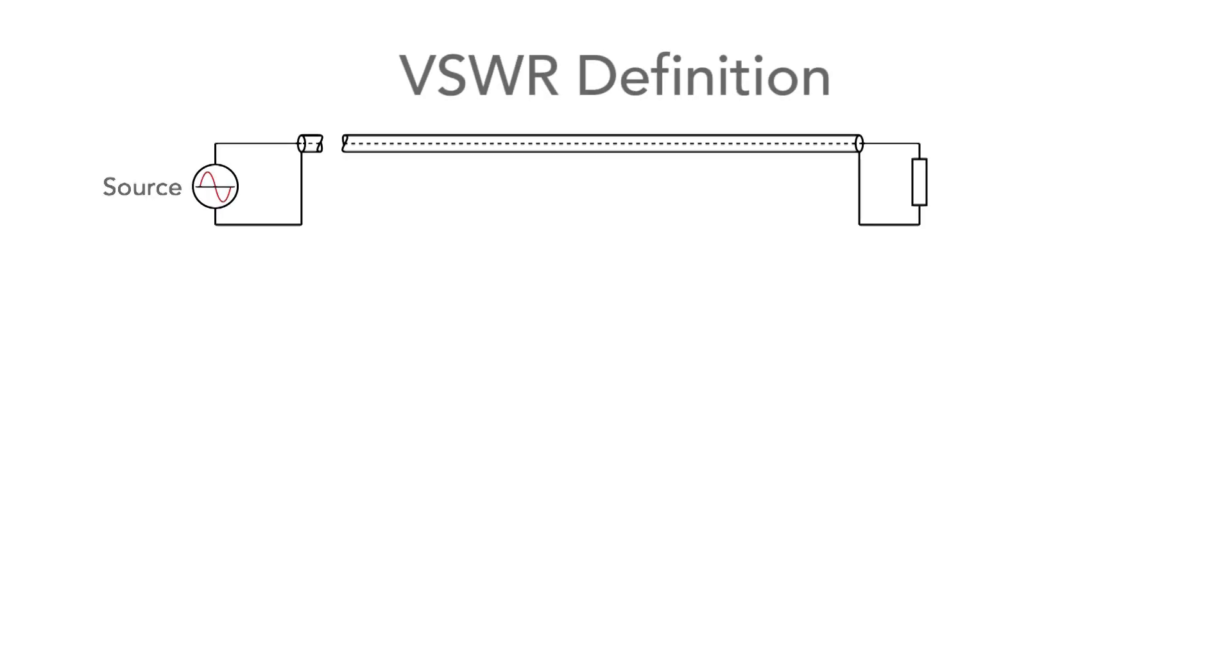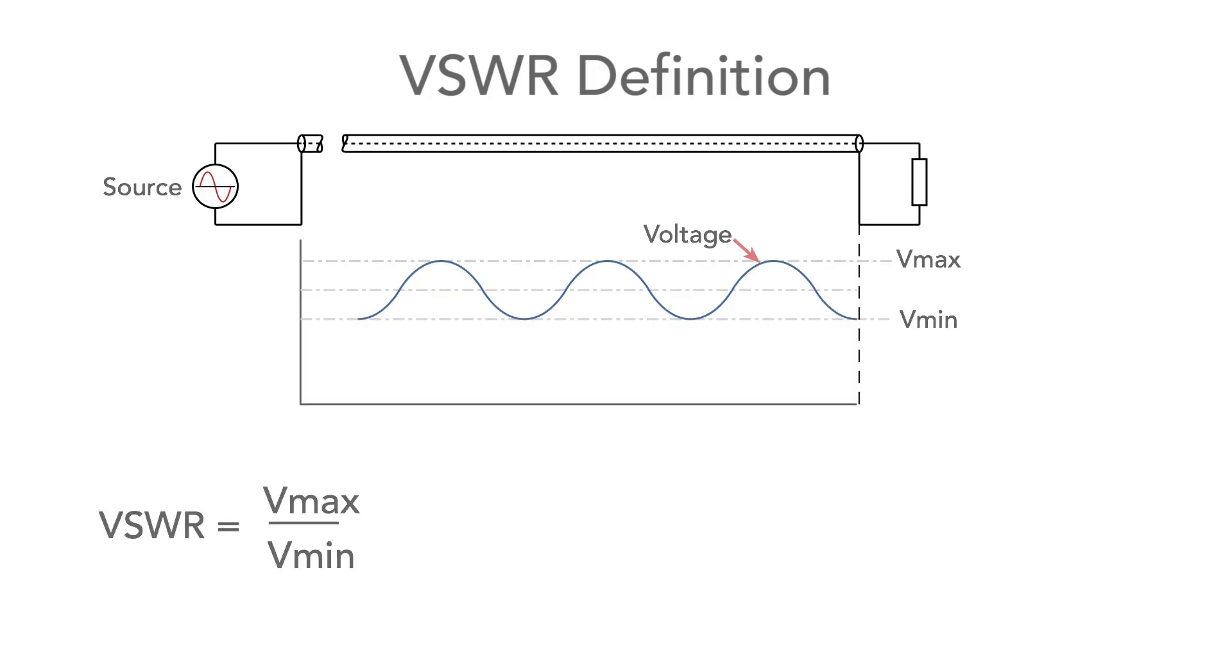Now we can define the voltage standing wave ratio. It's the ratio of the peak voltage along the feeder or transmission line to the minimum voltage. It varies from plus one to infinity and it's always positive. It's typically given as a ratio like two to one or three to one or even infinity to one and a perfect match is one to one.